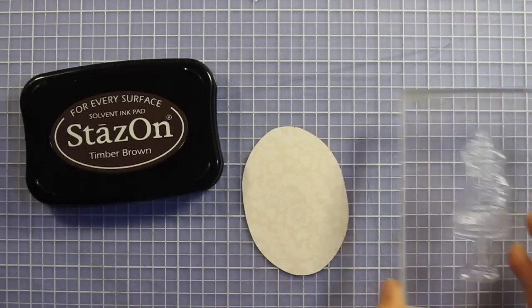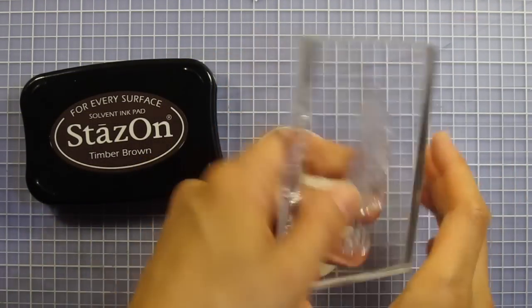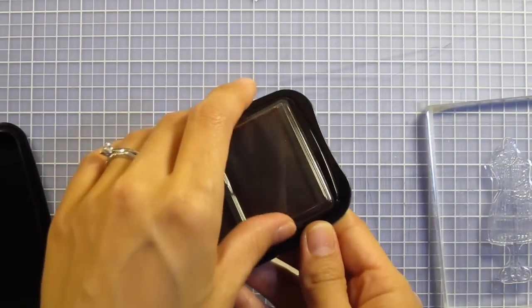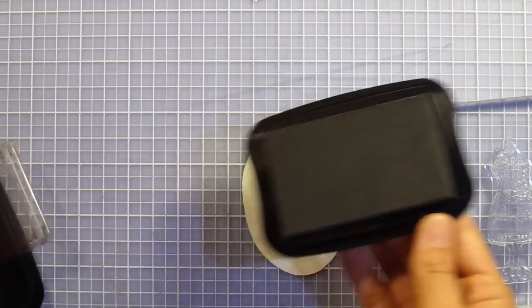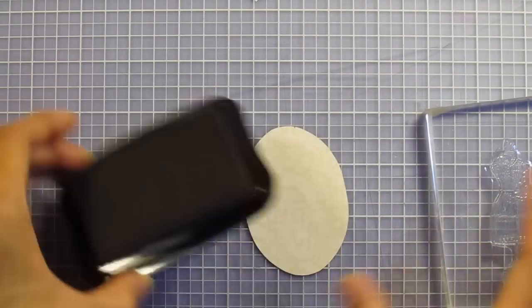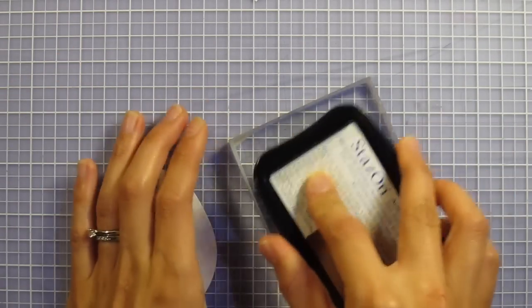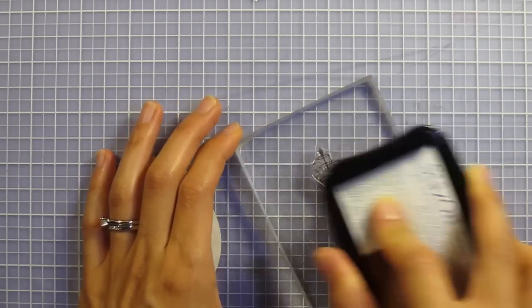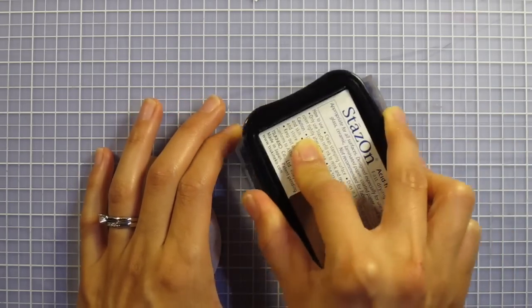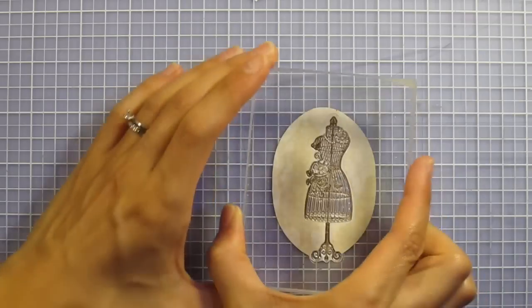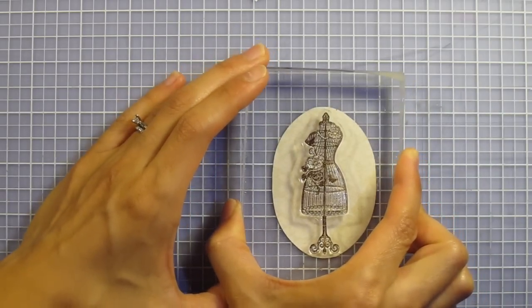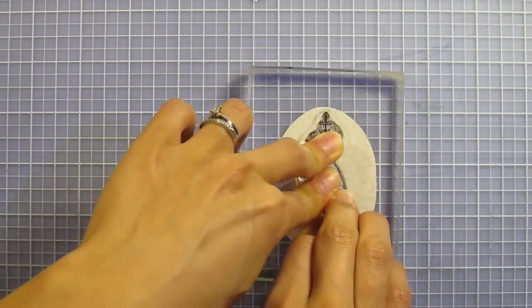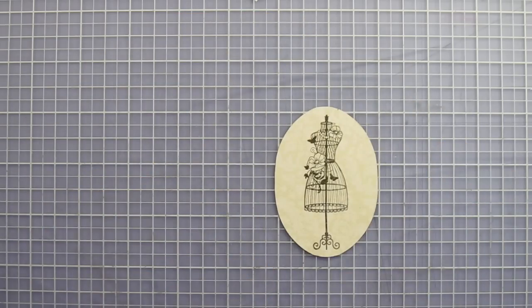Here I've got my oval, I've got my stamp all in the acrylic block. I'm going to use Timber Brown Stazon for my dress form stamp. Here's the inner cover, just like the copper had. I'm going to ink up my stamp nice and evenly and stamp right in the center here. Looking good.